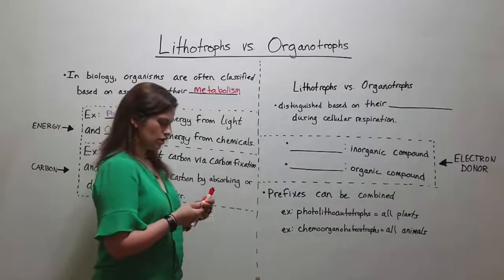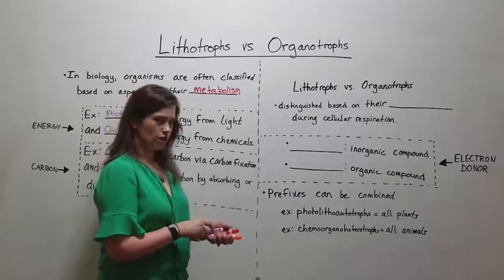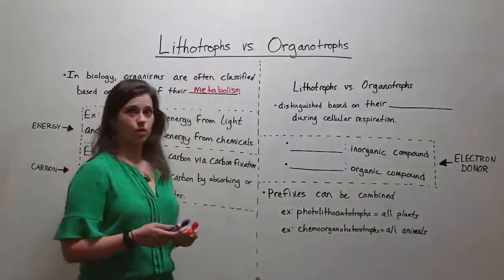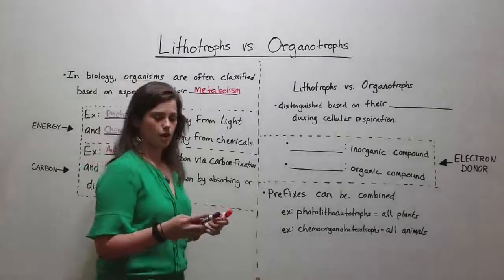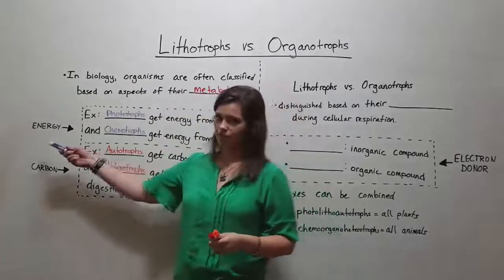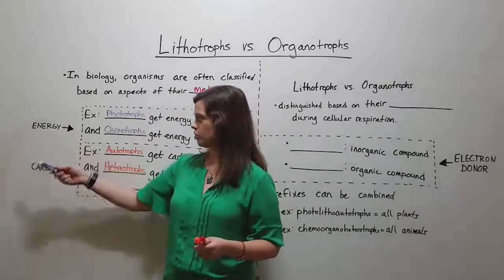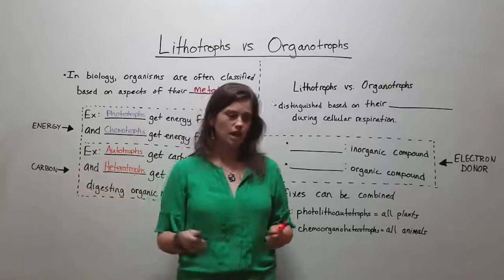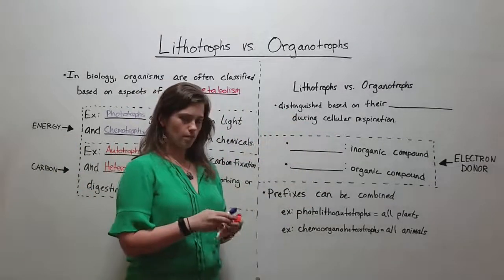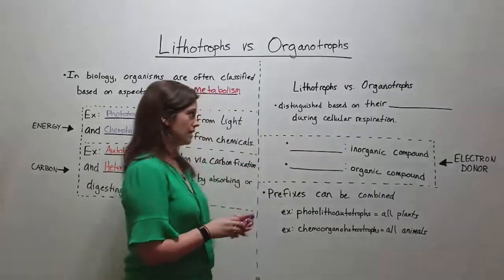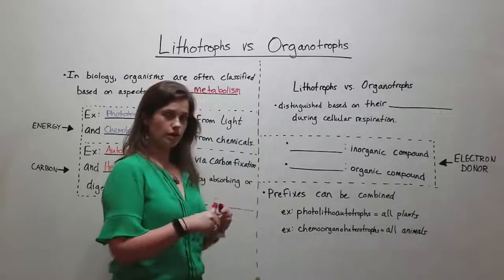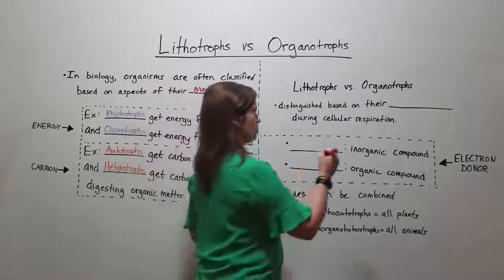That brings us to the focus of today's video: lithotrophs and organotrophs. We talked about how organisms can be classified based on how they acquire energy or how they acquire carbon, but lithotrophs versus organotrophs are distinguished based on their electron donor during cellular respiration.